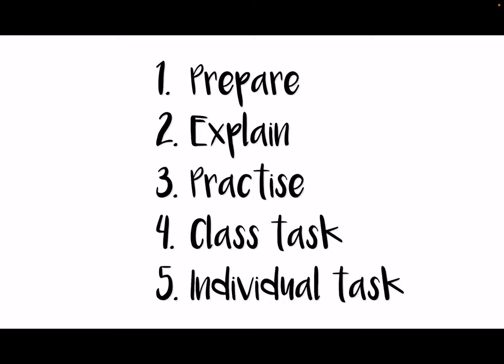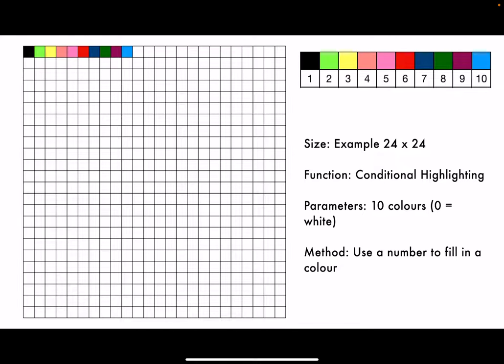For preparation, I prepare a table in Keynote — for example, 24 rows and 24 columns. The function we're going to be using is called conditional highlighting with 10 colors — actually 11, because we're going to use zero as white. The method is: we use a number to fill in a color. It's really easy, and I'm going to explain how this is done in the next slide.